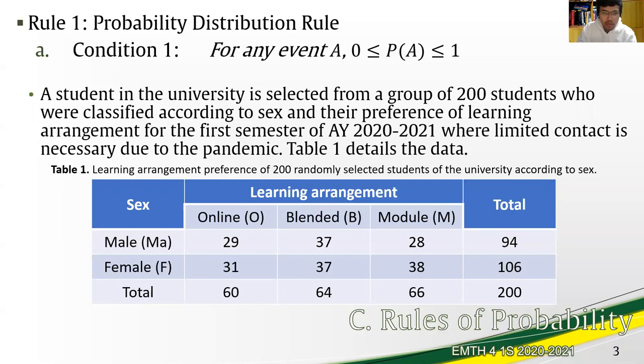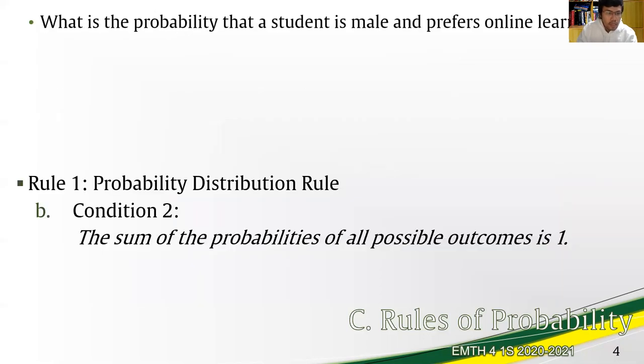The distribution according to these categories are shown in table one. For example, males who prefer an online learning arrangement number 29, while the total number of females, regardless of their choice, number 106.